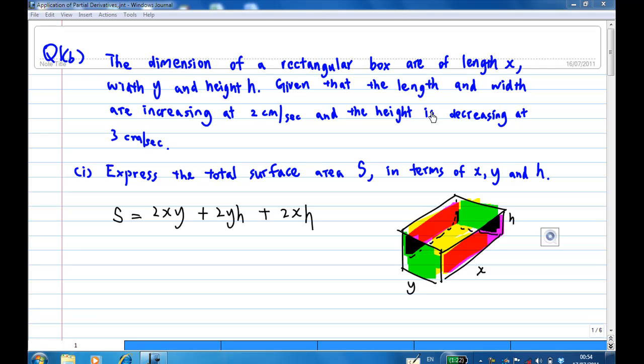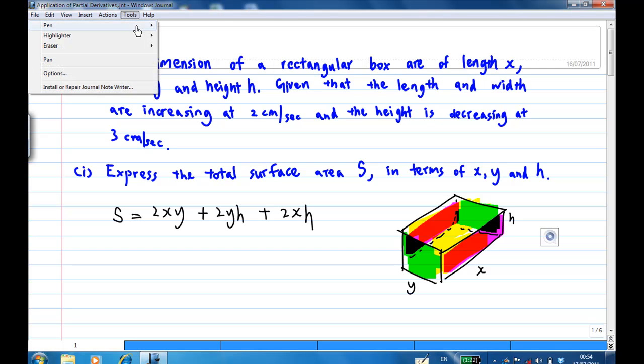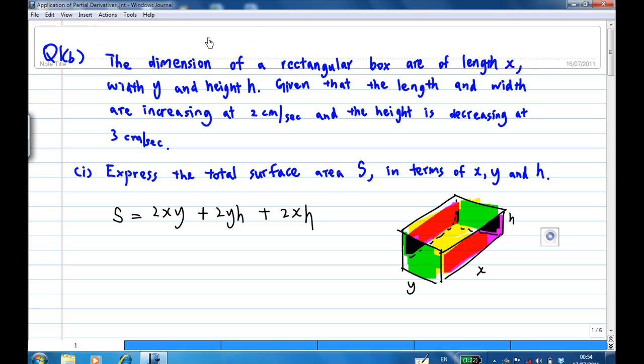I have drawn the rectangular box here. This rectangular box has six surfaces. Now, the top and bottom surface area is xy, so there are two of them, so 2xy.